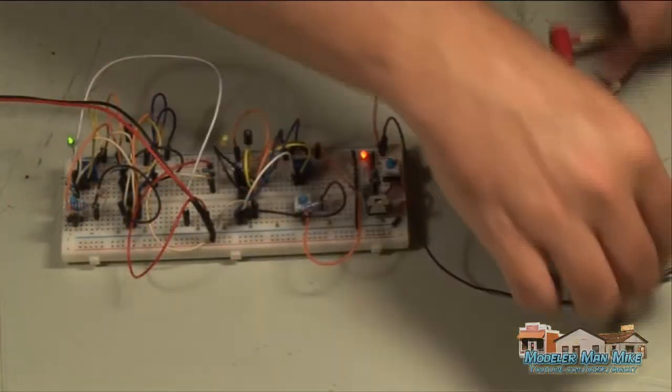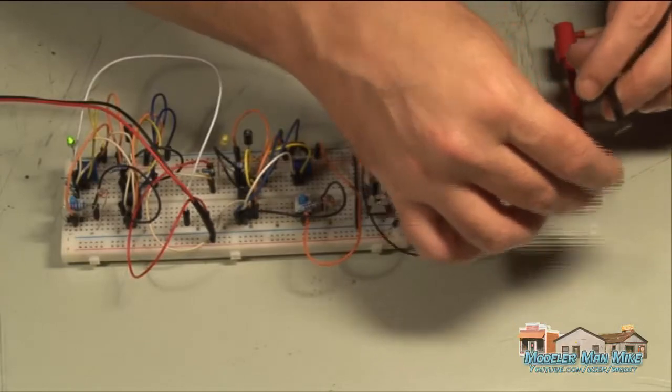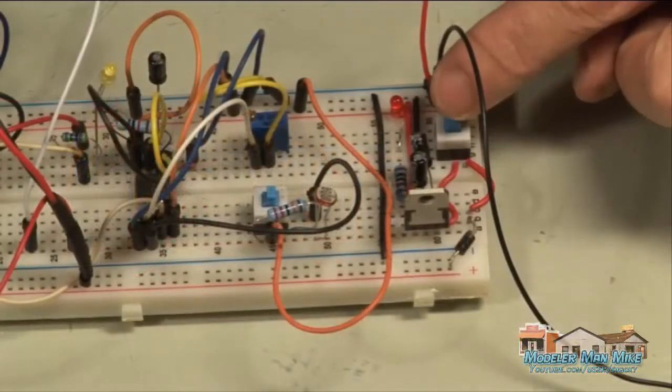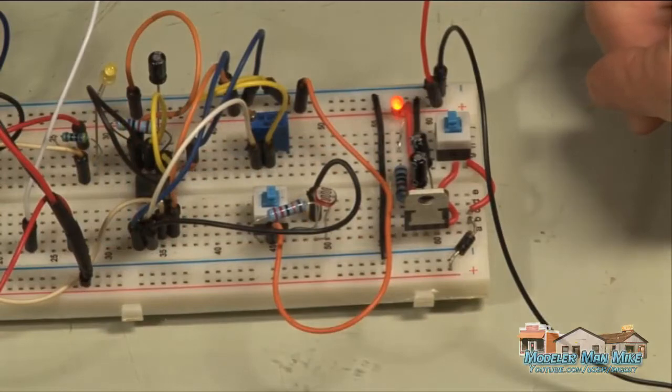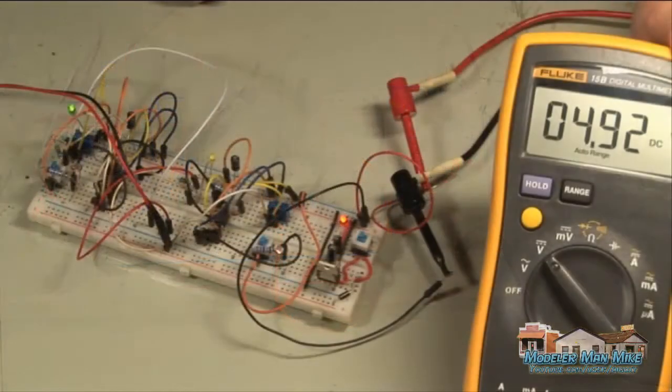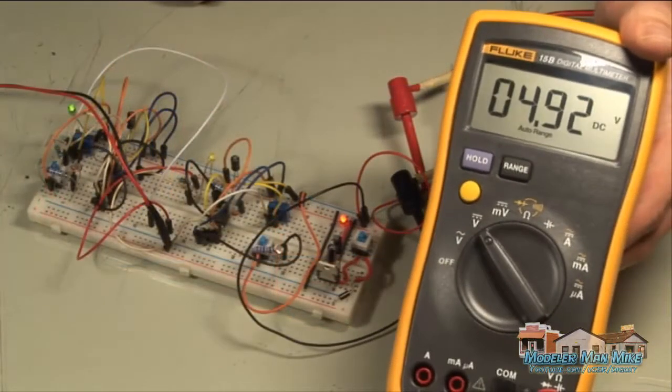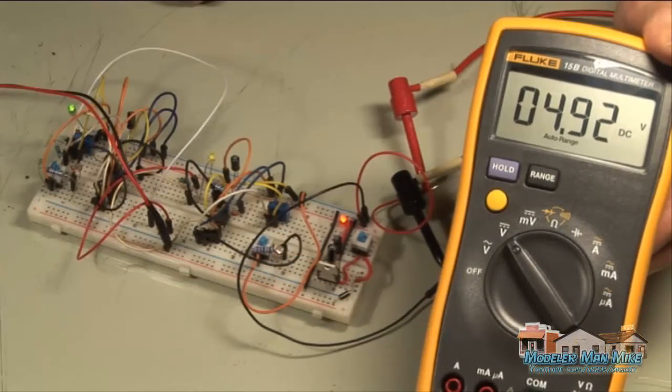Plug in my bench power supply. Plug in my test leads. And apply the power using this little switch. And get a reading for my 7805 that's in there.